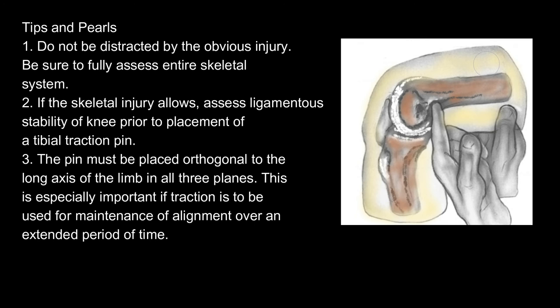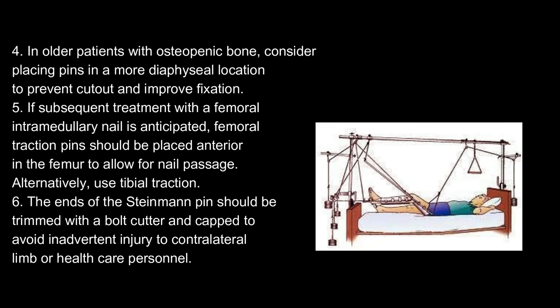Tips and pearls: 1. Do not be distracted by the obvious injury — be sure to fully assess the entire skeletal system. 2. If the skeletal injury allows, assess ligamentous stability of the knee prior to placement of a tibial traction pin. 3. The pin must be placed orthogonal to the long axis of the limb in all three planes. This is especially important if traction is to be used for maintenance of alignment over an extended period of time.